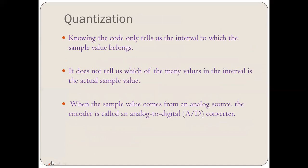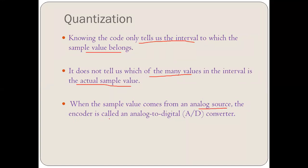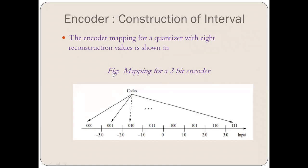Knowing the code only tells us the interval to which the sample value belongs. It does not tell us which of the many values in the interval is the actual sample value. When the sample values come from an analog source, the encoder is called an analog-to-digital converter, meaning we are converting from analog to digital.